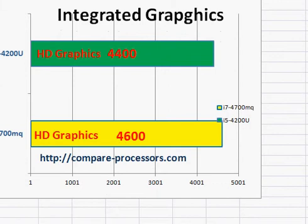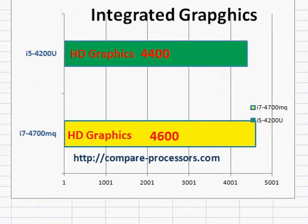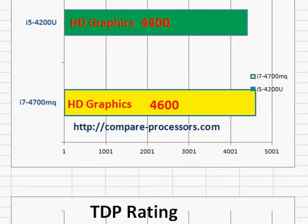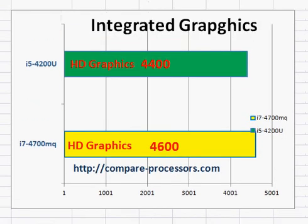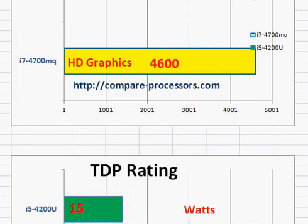Regarding integrated graphics, both processors come with integrated graphics and the MQ part comes with slightly better graphics. Neither of them is great for high-end gaming, but both are still good for smooth video display and some games that do not heavily tax the graphics processing power. You can play some games at low to medium graphics settings.